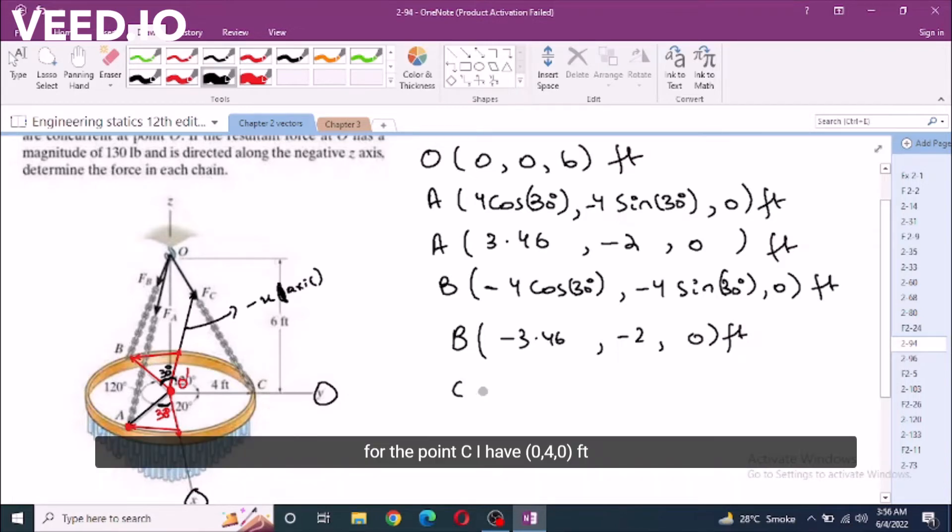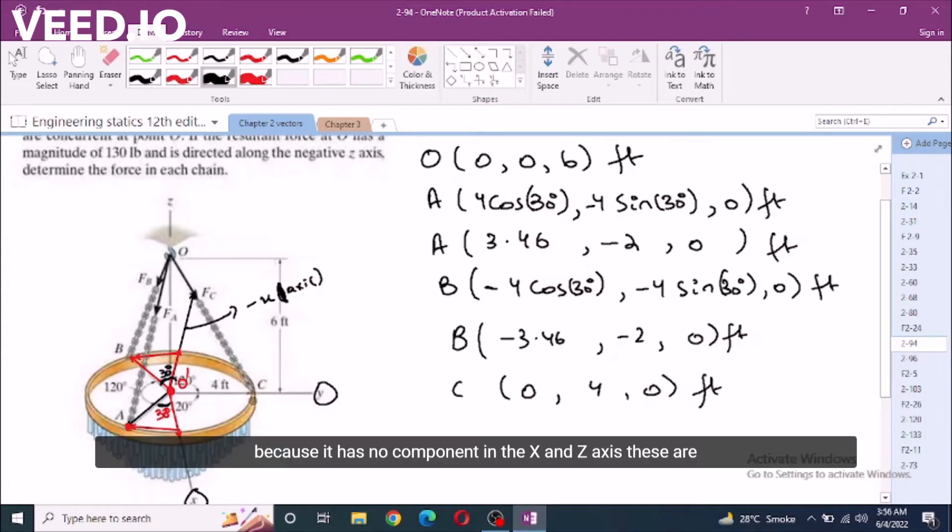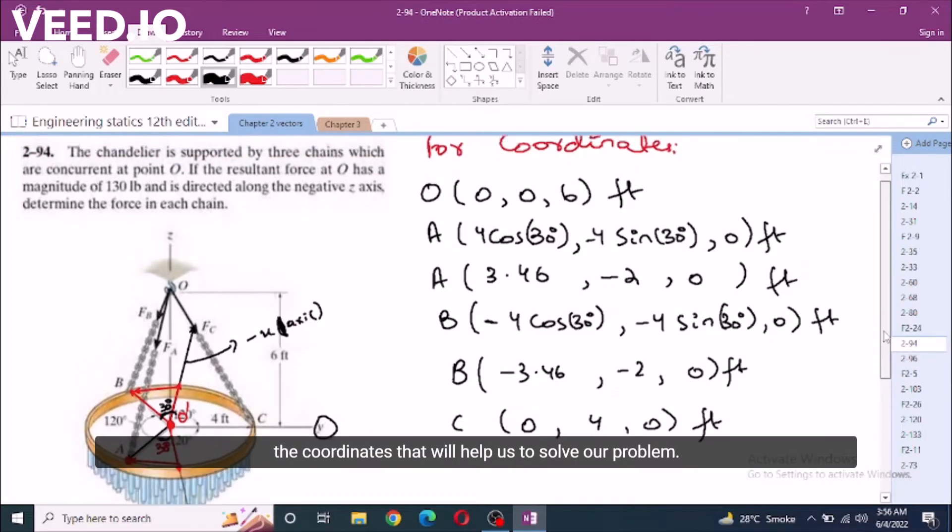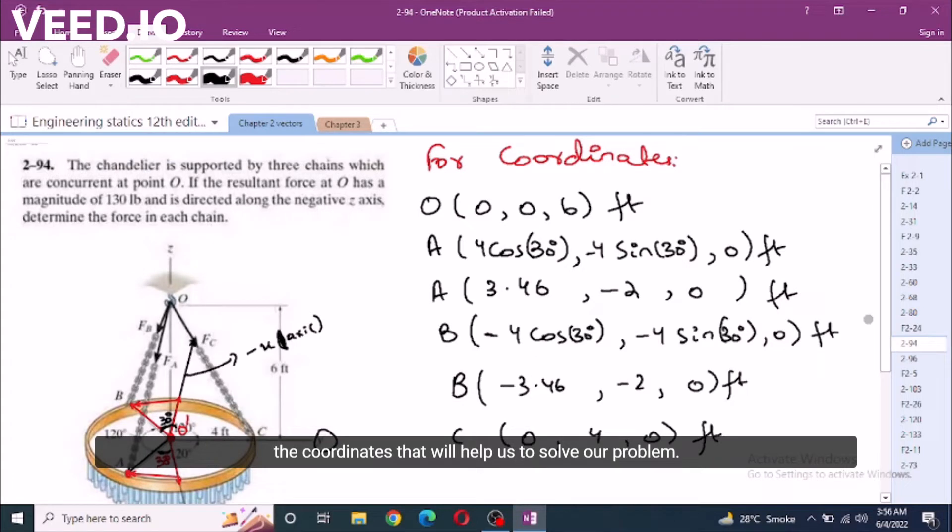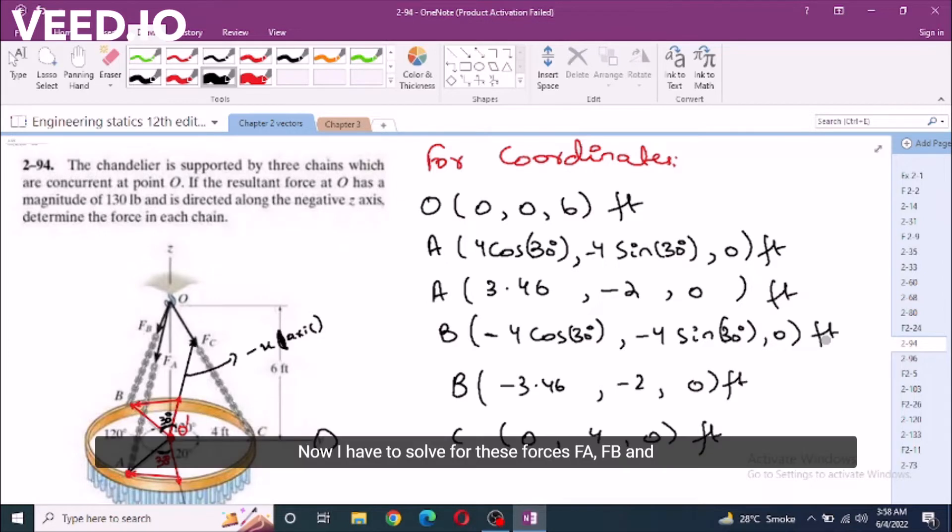Also for point C I have (0, 4, 0) because it has no component along x and z-axis. These are the coordinates that will help us to solve our problem.